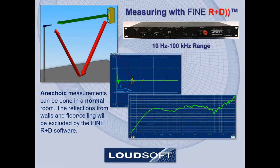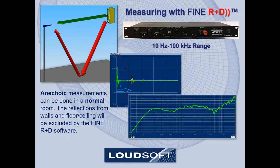Looking at the top left figure, we see the direct sound indicated by the green arrow, whereas the red arrows indicate the reflection from the floor. The Fine R&D software will analyze this in the time domain shown in the center picture. Here we see the reflection as a yellow impulse arriving a little later. This will be filtered out by the time window, giving us the true anechoic response shown at the right.